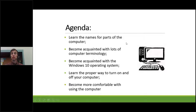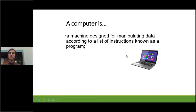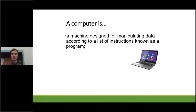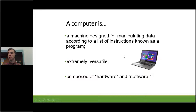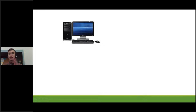So what is a computer? It's a machine designed for manipulating data according to a list of instructions known as a program. That basically means the computer you're using has a number of different programs installed that perform different tasks — some tasks that you do yourself, some that the computer needs to perform specific operations. A computer is extremely versatile and is composed of hardware and software.